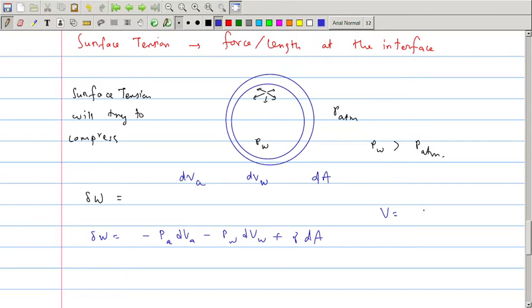Now V equal to 4 by 3 pi r cube initially. Area will be 4 pi r square. So dV is equal to 4 pi r square dr. This is dV water. dV water is equal to minus dV air, so the reduction in the volume of air is the same as the increase in volume of water. And from here we can get dA is 8 pi r dr.